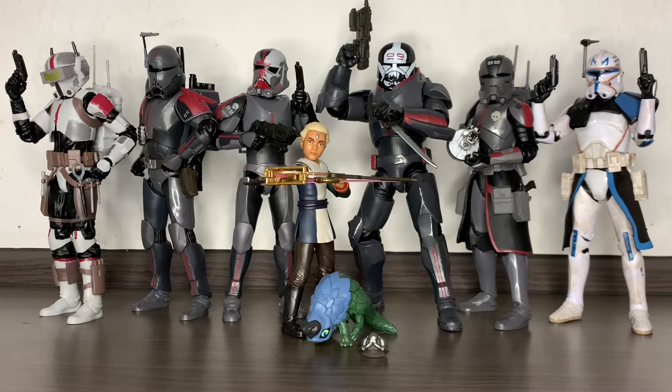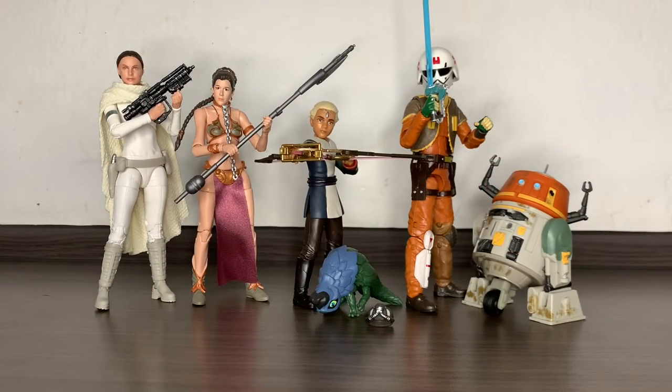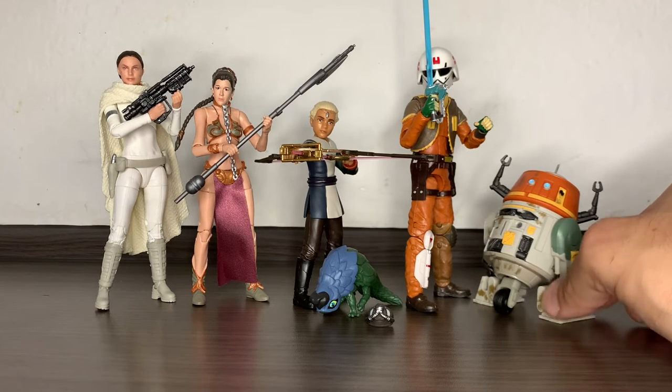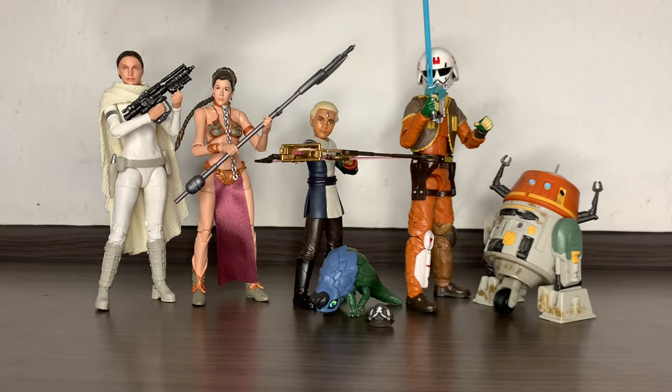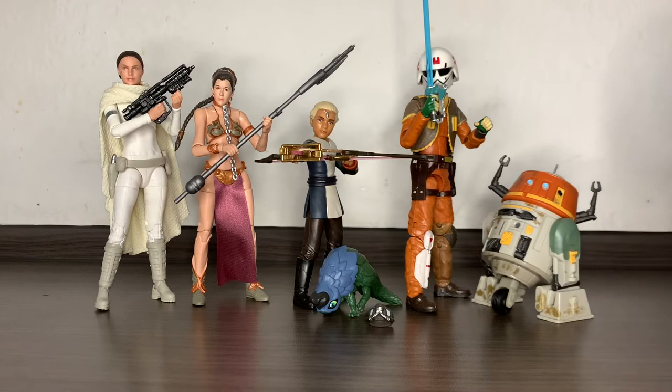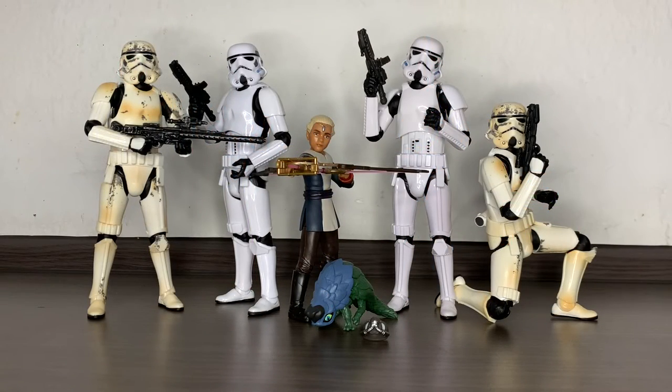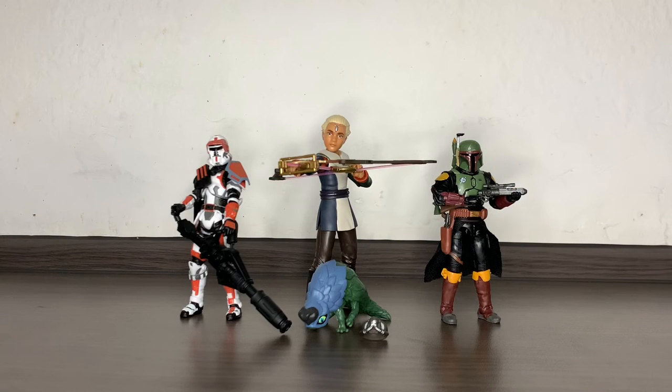There you have Omega surrounded by some of the smaller Star Wars Black Series figures like Chopper, Ezra, Slave Leia, and Padme. I really need a custom head for my Slave Leia because that's kind of terrible. There you have her next to a bunch of Clone Troopers and next to vintage collection figures in case you were asking how she scales with them.